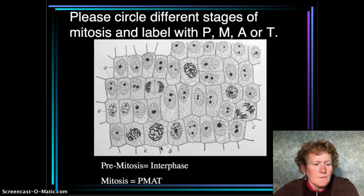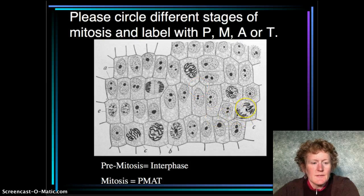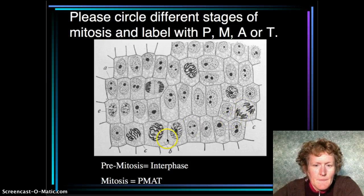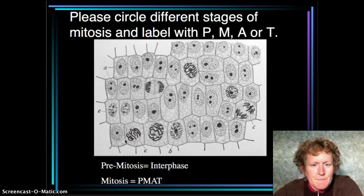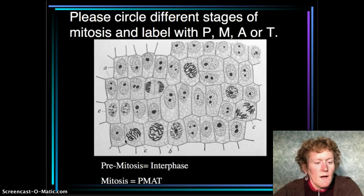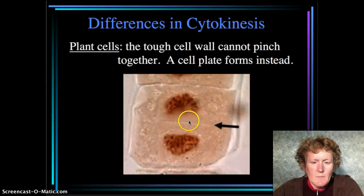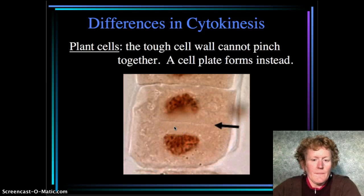Here's a photo of a real onion root tip. You can see the different stages: here is interphase where the cell is getting ready, and here you can see anaphase where chromosomes are at opposite ends. Here's what looks like metaphase where everybody's sort of in the middle. Cytokinesis in plants happens a little differently because there's a cell wall — a plate forms rather than pinching off the way animal cells do. You can see a plate forming between the two plant cells.